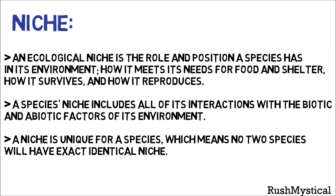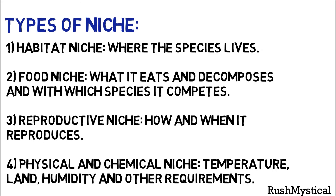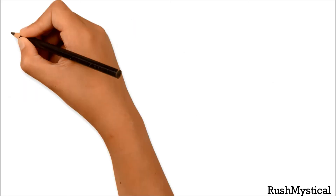An ecological niche is the role and position a species has in its environment — how it survives and how it reproduces. A species' niche includes all its interactions with the biotic and abiotic factors of its environment. A niche is unique for a species, meaning no two species will have exactly identical niches. There are four types of niche: habitat niche (where the species lives), food niche (what it eats), reproductive niche (how and when it reproduces), and physical and chemical niche (temperature, land, humidity, and other requirements).